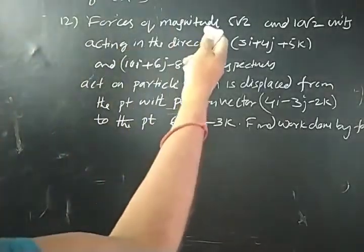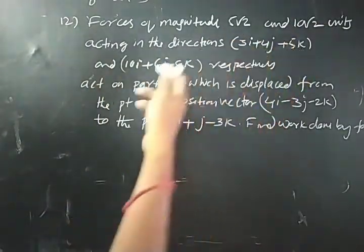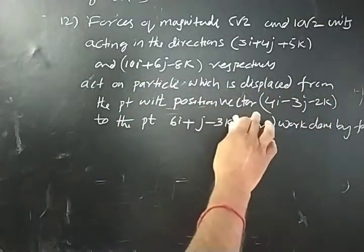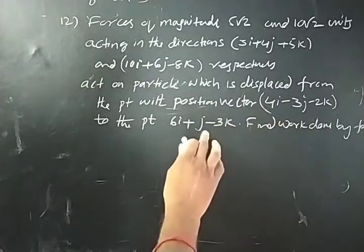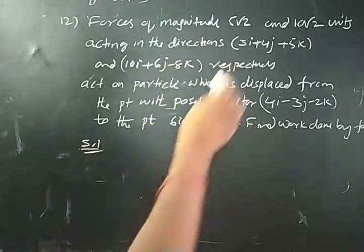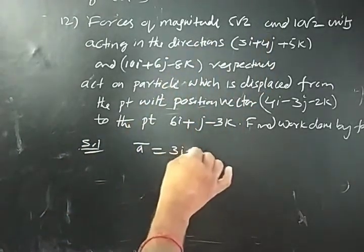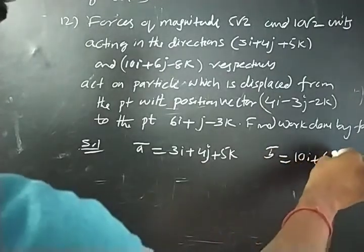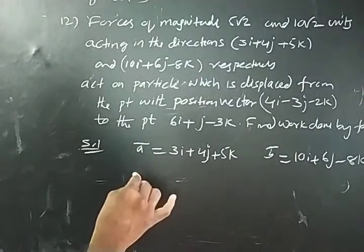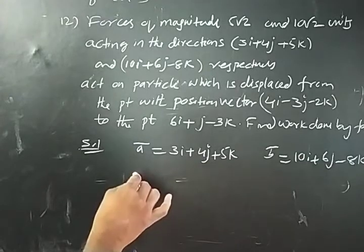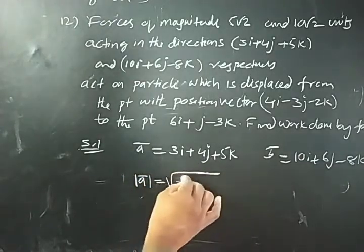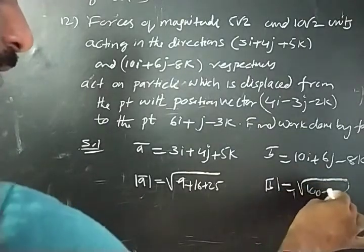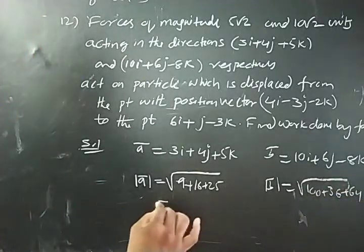Next question: forces of magnitude 5√2 and 10√2 units acting in the direction of vectors a bar = 3i + 4j + 5k and b bar = 10i + 6j − 8k respectively act on a particle displaced from one point to another. Solution: mod a bar equals √(9 + 16 + 25) = √50 = 5√2. Mod b bar equals √(100 + 36 + 64) = √200 = 10√2.